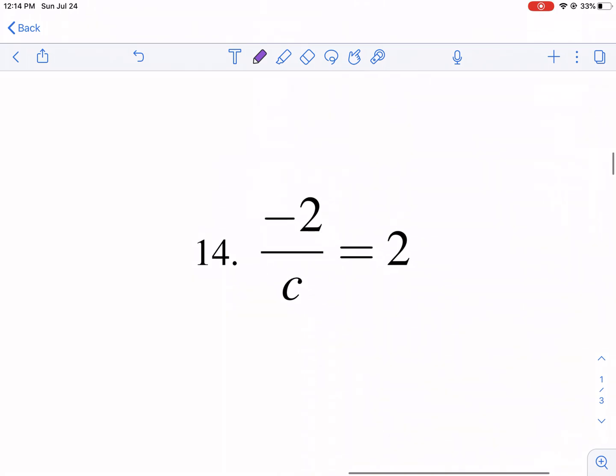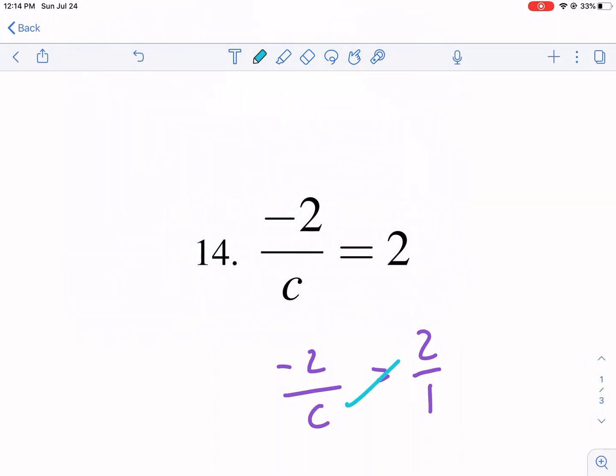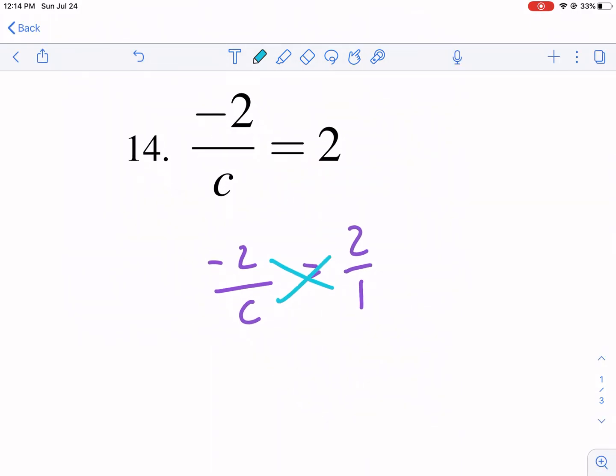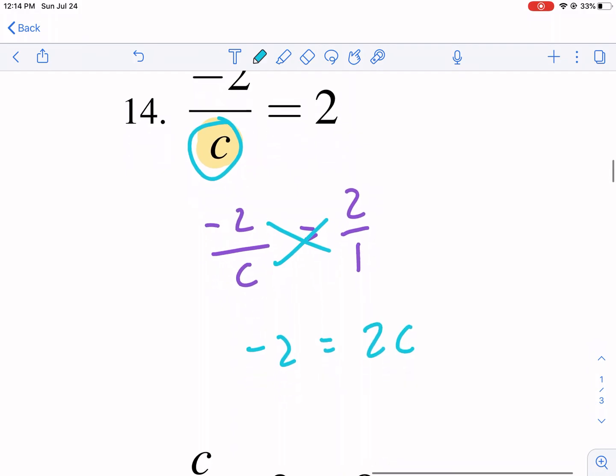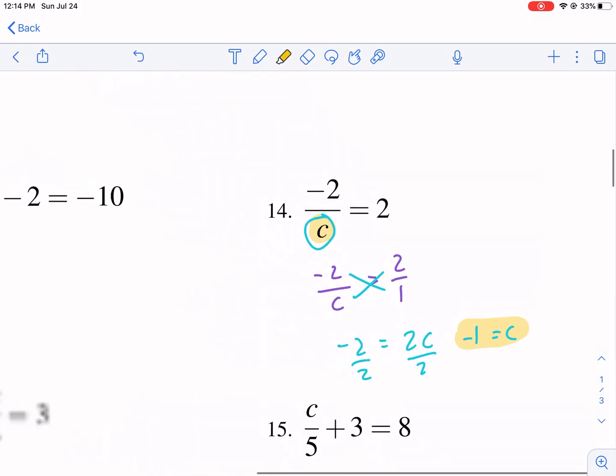Let's do one more tough one like that. I'm going to jump to 14. We have negative 2 over c equals 2. My recommendation is to put this over 1 and then cross multiply. That's a key feature. So we'd get negative 2 times 1 is just negative 2. And then we'd have 2c on the right. And then we'd just divide by 2. That way, we don't have to worry about a variable in the denominator. So c equals negative 1. There's our answer.